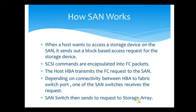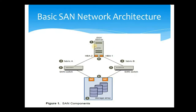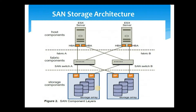The storage array processes the request and sends a response back to the host through the same path by which the request arrived. As shown in the diagram, the host sends a request, the HBA receives it and sends it to the SAN switch — either Fabric A or Fabric B — which then forwards it to the storage processor. If it is a read request, the storage array reads the data and sends it back through the same path. If it is a write request, the storage array sends an acknowledgement back to the host confirming that the data has been written.